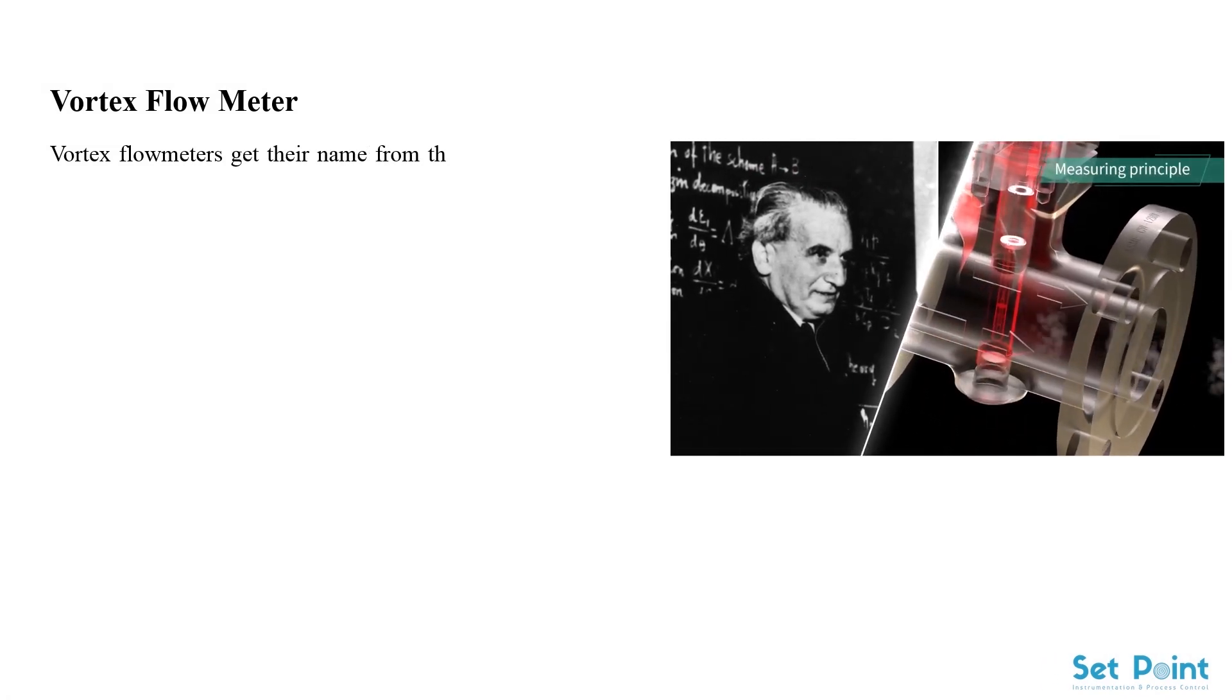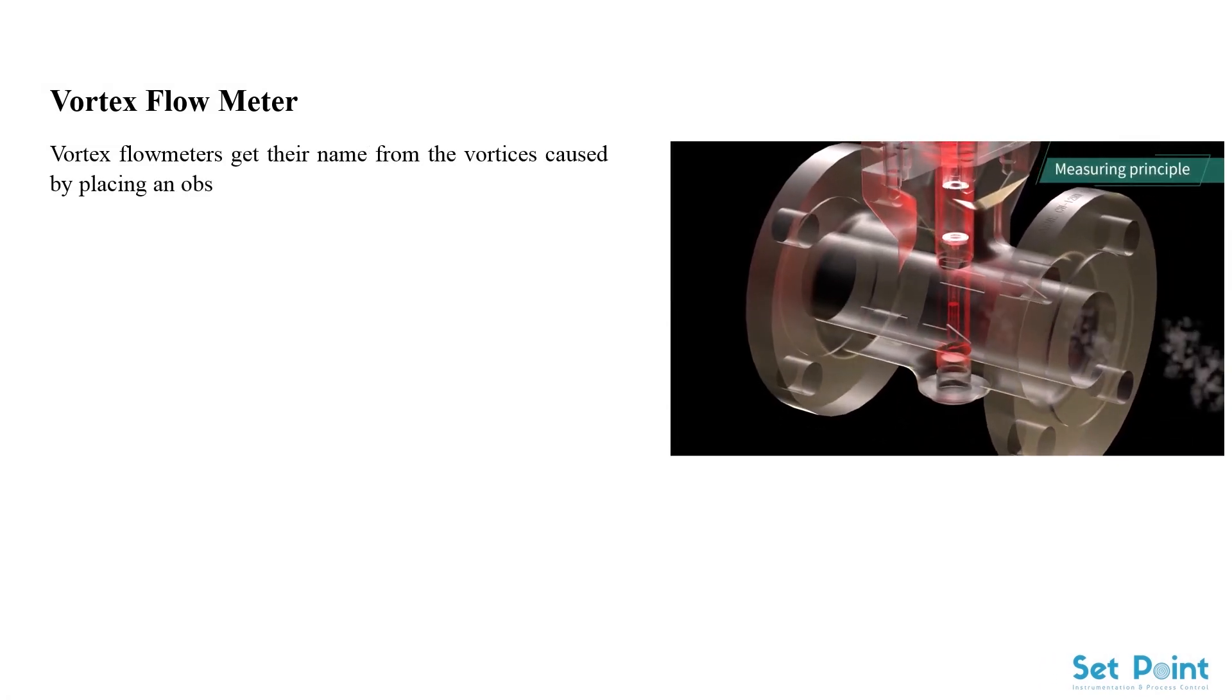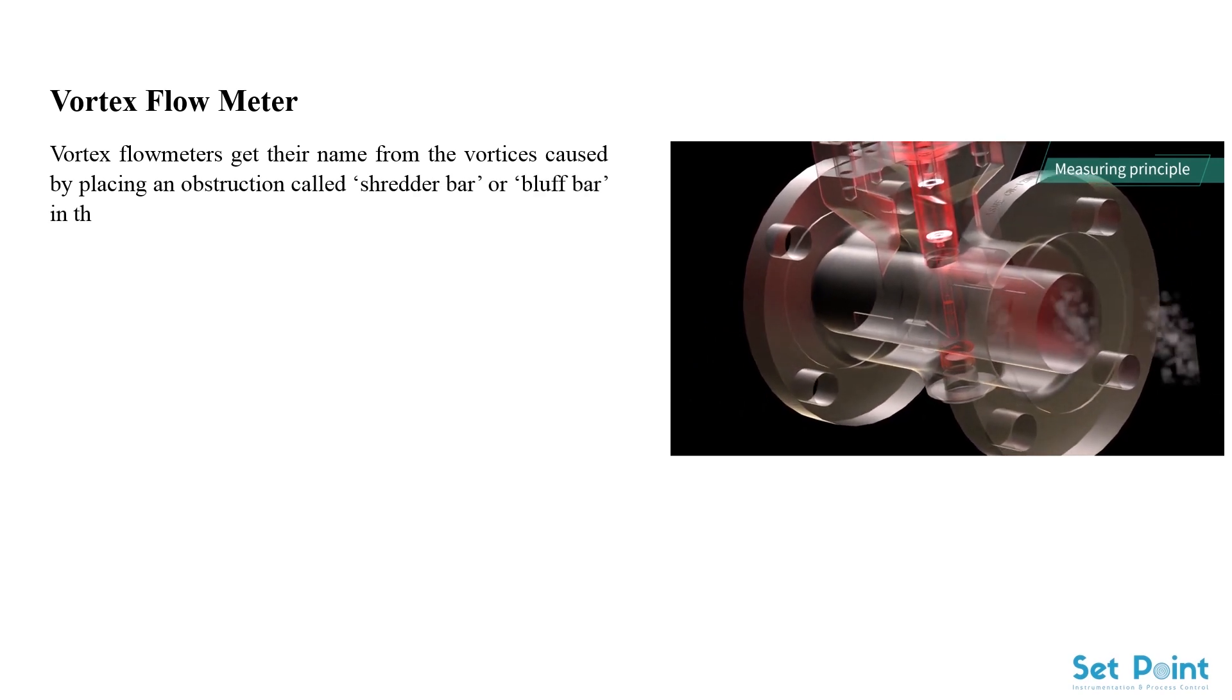Vortex flow meters get their name from the vortices caused by placing an obstruction called shredder bar or bluff bar in the flow path.